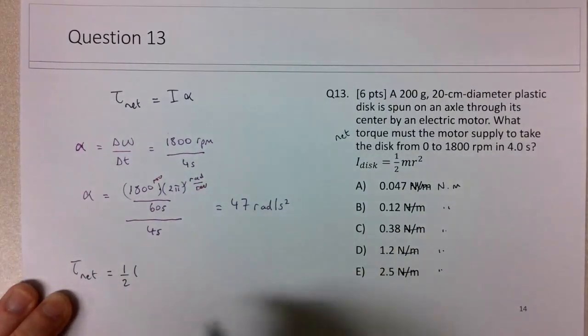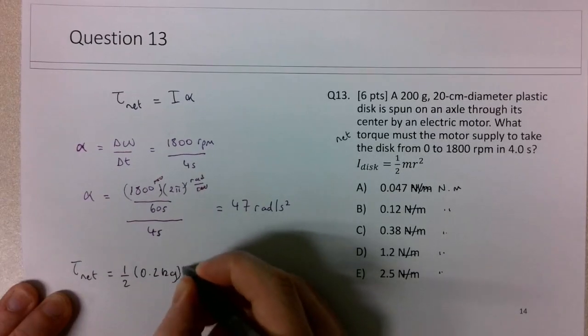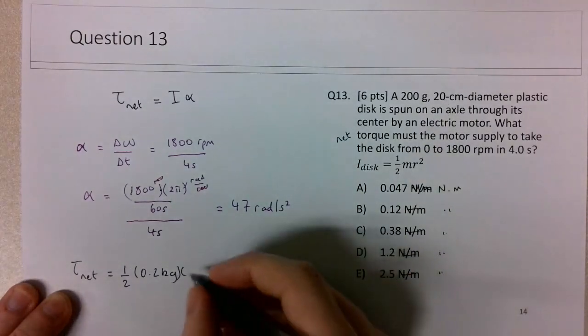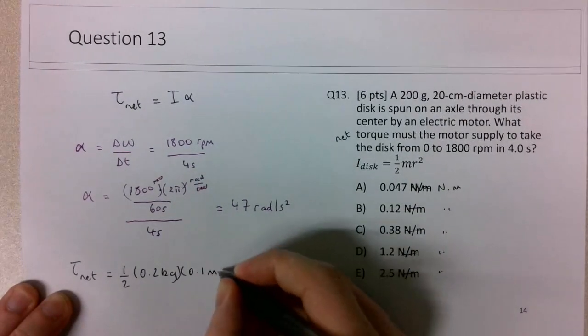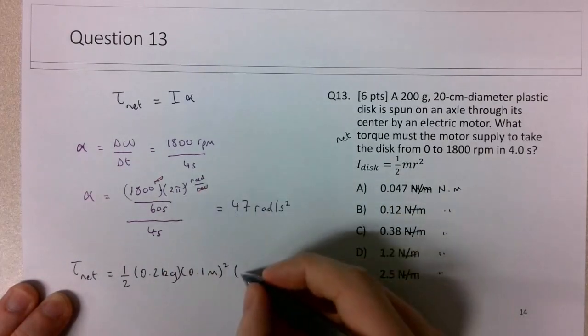So one half, make sure everything is in the correct SI units. So 200 grams is 0.2 kilograms. The radius will be half, which is 20 centimeters. So that's 10 centimeters, which is 0.1 meters. And you have to square all that quantity. And then you multiply by alpha, so all that work here above.